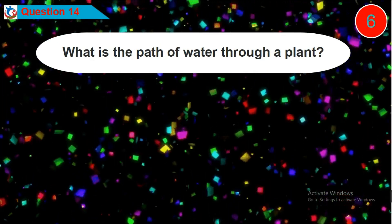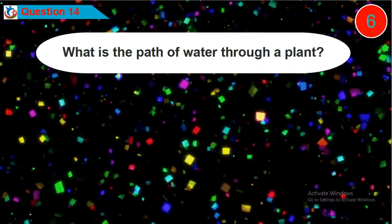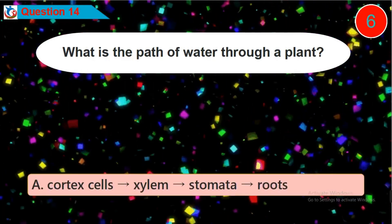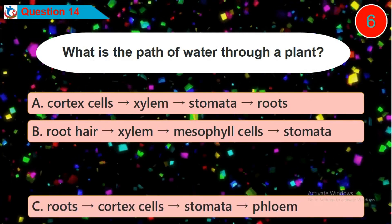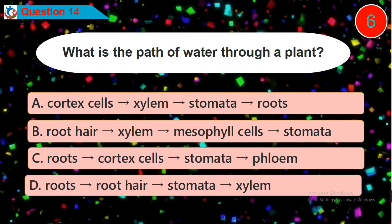Question 14. What is the path of water through a plant? Is it option A, B, C or D?